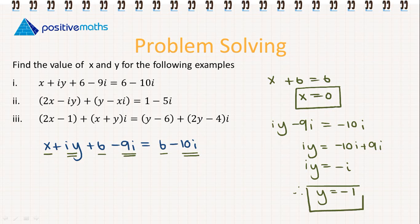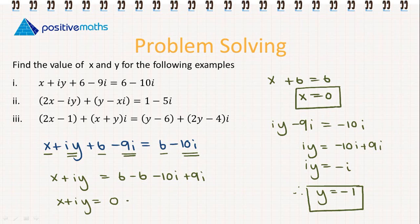What we could have also done was simplify our equation from the start. We could have had x plus iy equal to 6 minus 6 minus 10i plus 9i, which simplifies to 0 minus i. So again we would have said x is equal to 0 and y is equal to minus 1.